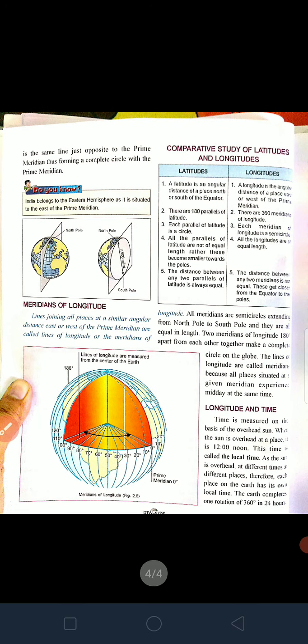The longitude of 180 degrees east and west is the same line — just opposite to the prime meridian. On the front part of the globe where we locate the prime meridian, the back part has the 180 degrees east and west longitude, which are the same line, just opposite to the prime meridian — forming a complete circle together with the prime meridian. So the prime meridian and the 180 degree east and west longitude are each a half of the same complete circle.